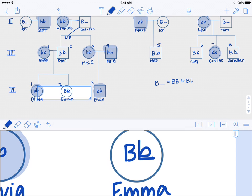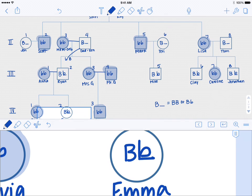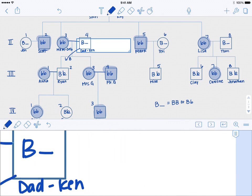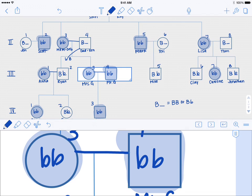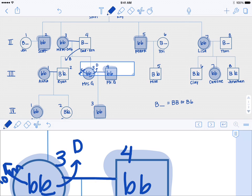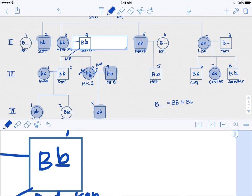We also can figure out some information if we look at people's offspring. Take for example my dad. My dad is big B blank. However he had me and I have blue eyes. I got one of my little b's from mom but I had to get the other little b from dad, meaning that my father must be big B little b. In order to have a child with blue eyes he has to be a carrier for the trait. Take a minute and see if there's anyone else who must be big B little b because they have a child that shows blue eyes.